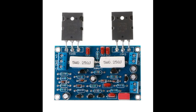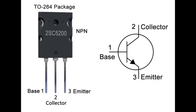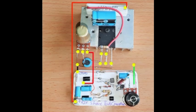Disadvantages of the 2SC5200 Transistor. Requires proper heat dissipation: due to its high power dissipation of 150 watts, it needs a large heat sink to prevent overheating. Slow switching speed: with a transition frequency of 30 MHz, it's not suitable for very high-frequency applications such as RF circuits. Large package size: the TO-264 package takes up more space compared to smaller power transistors or MOSFETs.